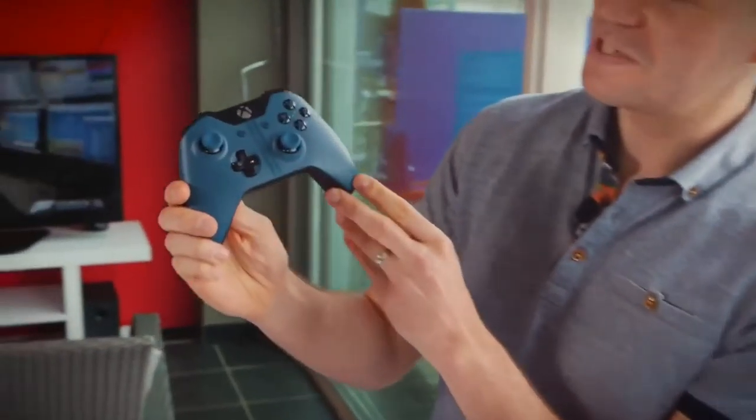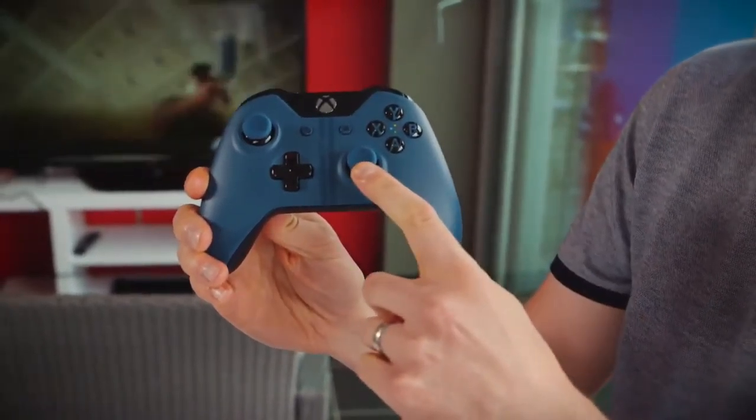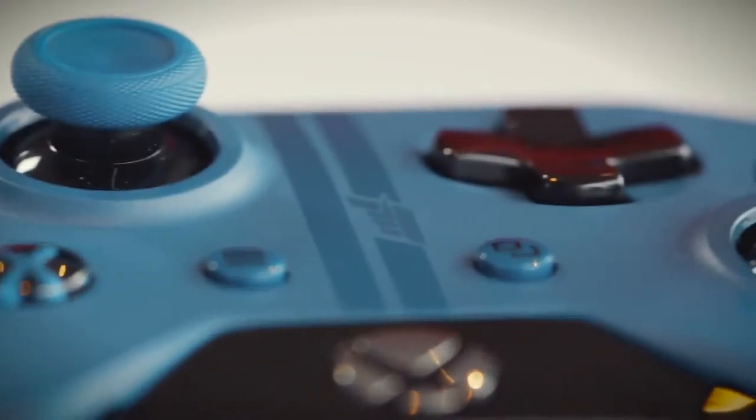So that's the console, let's take a look at the controller. As you can see, the beautiful blue color scheme is continued on the controller, including on the tops of the analog sticks as well. And the racing stripes run down the center of the controller as well, complete with another Forza logo.